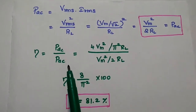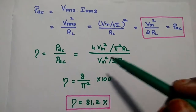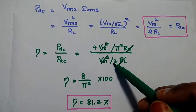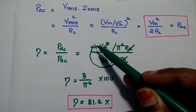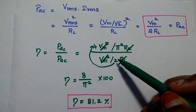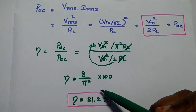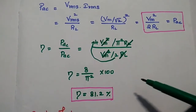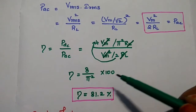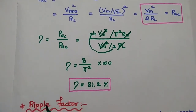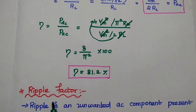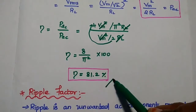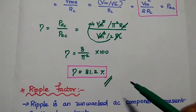Substituting both values into the efficiency formula and simplifying all terms: 4Vm²/(π²RL) divided by Vm²/(2RL) gives 8/π². Expressed as a percentage, efficiency = 81.2%. This value is higher than that of a half wave rectifier.